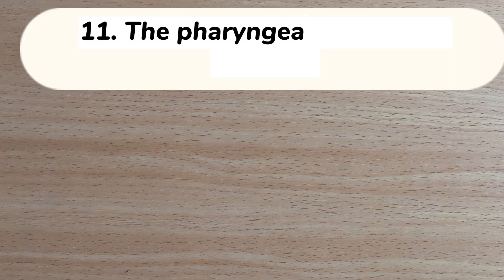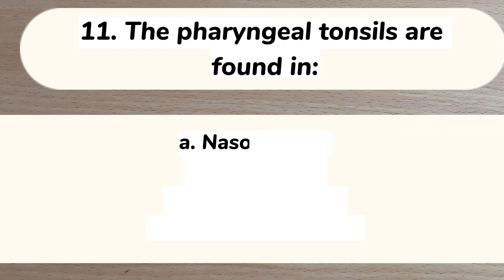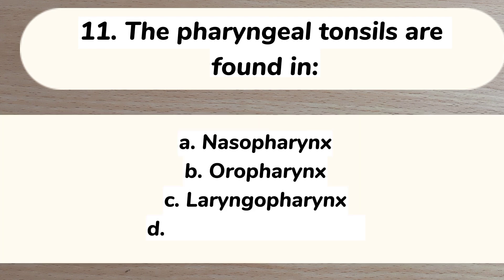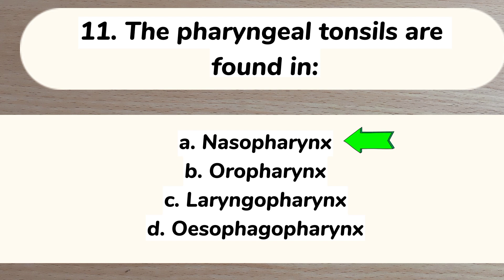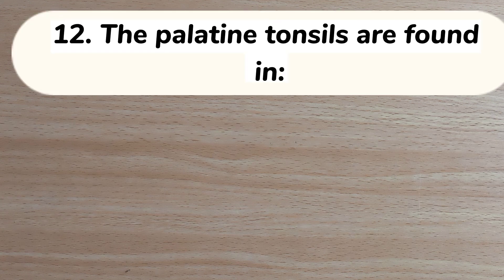Number 11. The pharyngeal tonsils are found in: A. Nasopharynx. B. Oropharynx. C. Laryngopharynx. D. Oesophageopharynx. Answer: A. Nasopharynx.